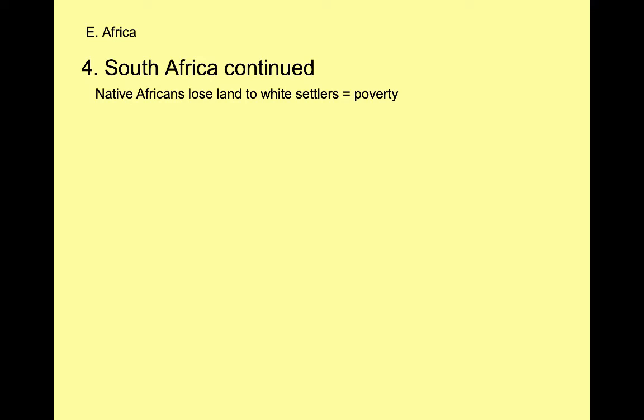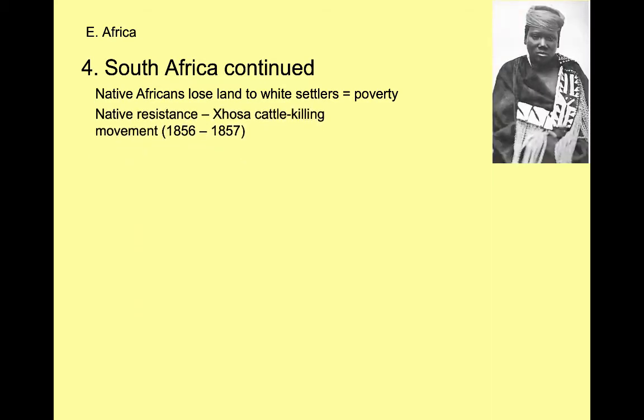As more and more Europeans arrived — now a new wave, the English — the Africans lost control of their land. If they could find a job, they were working for the British or Europeans for very little pay, creating more poverty among Africans. This leads to another example of native resistance, like we've talked about in other parts of this lecture.